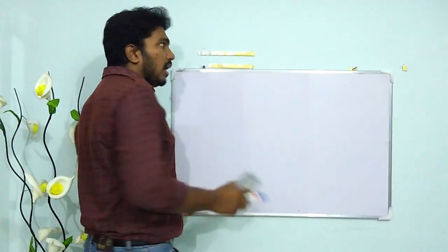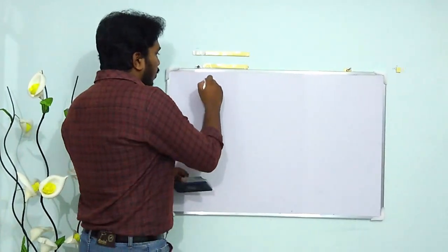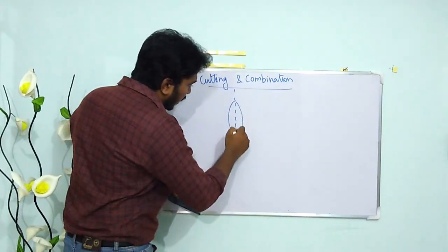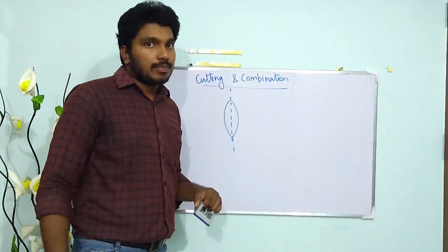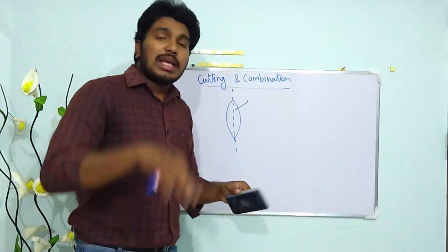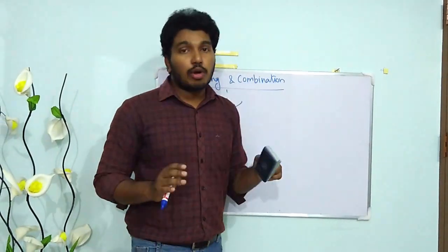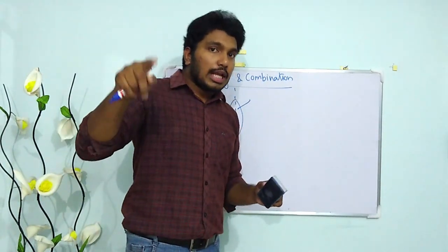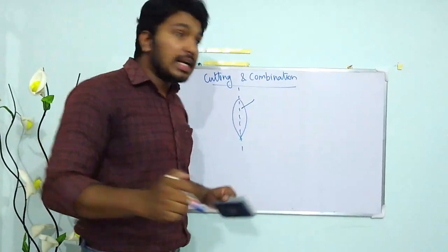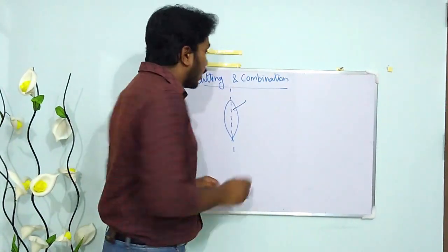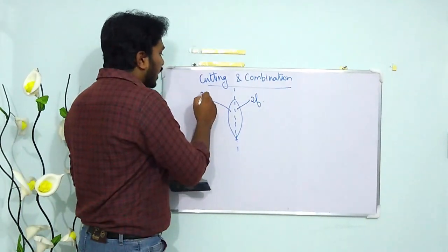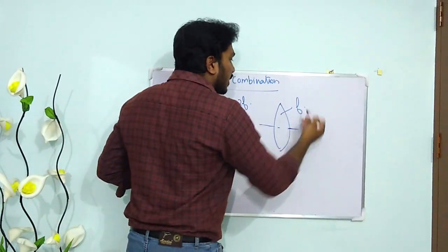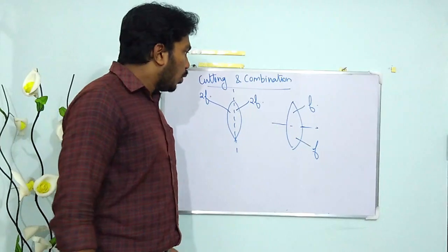Suppose we cut a convex lens vertically — we get two plano-convex lenses, each with focal length 2F (as derived from the lens maker's formula). If we cut the lens horizontally, each half retains focal length F.